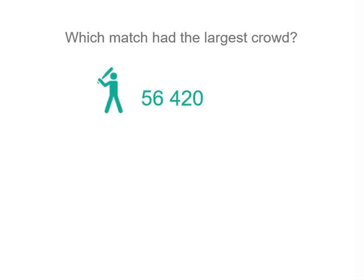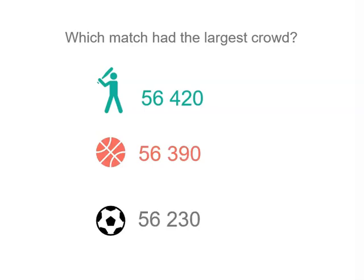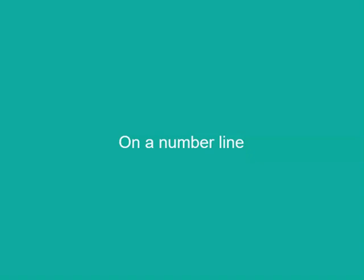We added up the numbers from all the matches on the weekend and 56,420 people went to baseball, 56,390 went to basketball, and 56,230 went to soccer. Now we could put them on a number line.